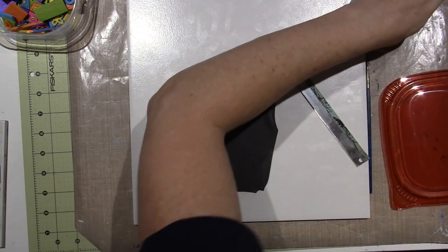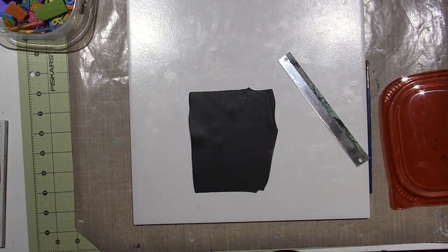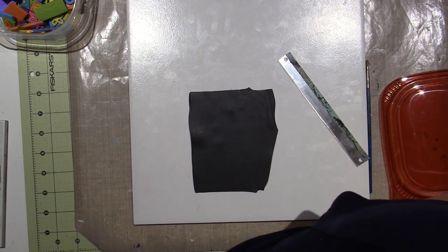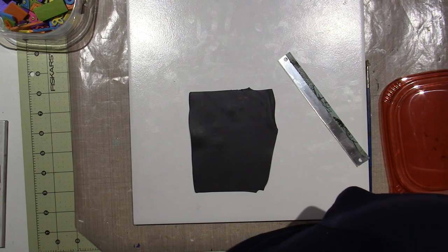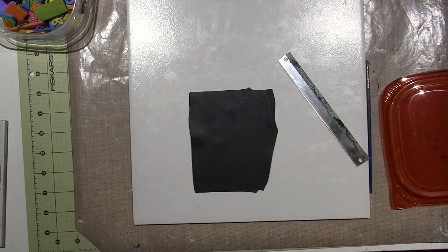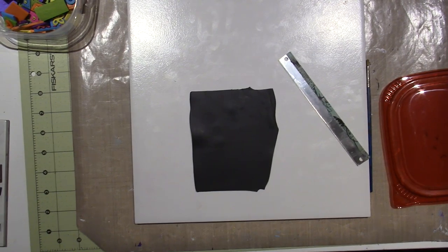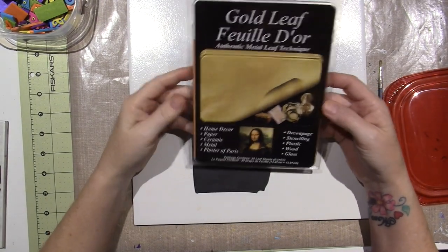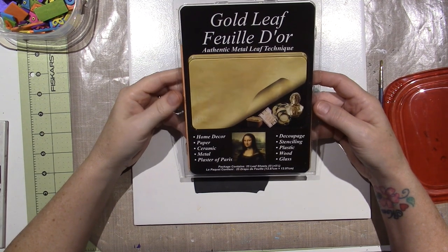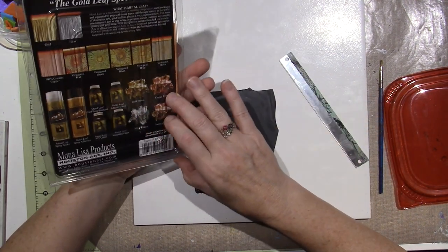Where is it? I just put it somewhere. All right, I'll be right back while I find it. It's right here. I found it. I have the gold leaf by Mona Lisa products.